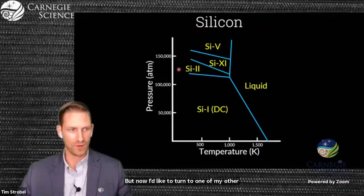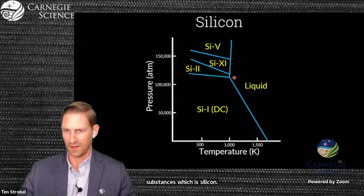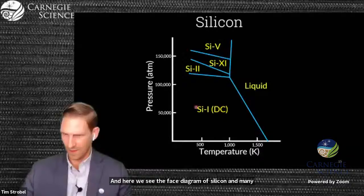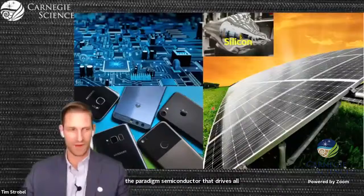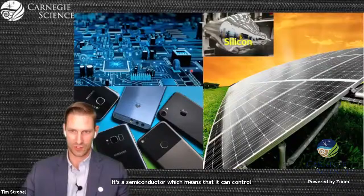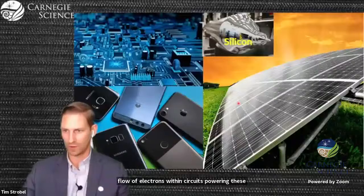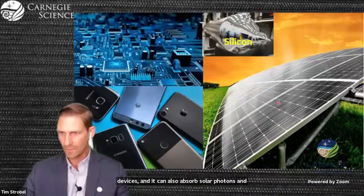But now I'd like to turn to one of my other favorite substances, which is silicon. Here we see the phase diagram of silicon in many ways similar to that of water. But this normal phase of silicon, silicon 1 or diamond cubic, is really the paradigm semiconductor that drives all of our microelectronics and devices that we use today. It can control the flow of electrons within circuits and absorb solar photons and convert them into electricity.